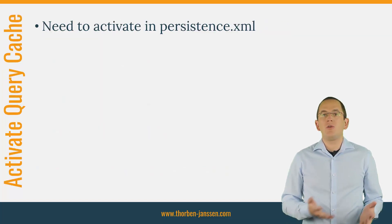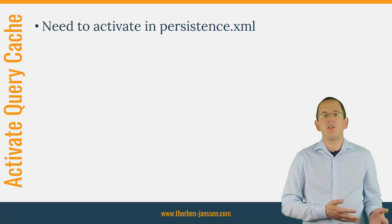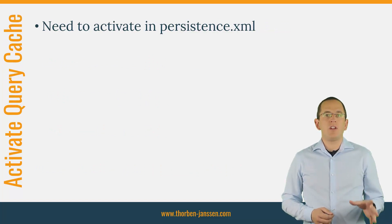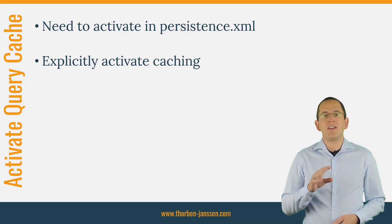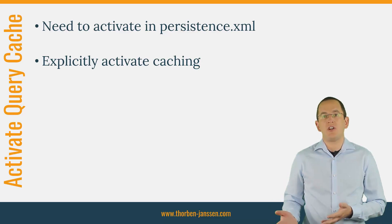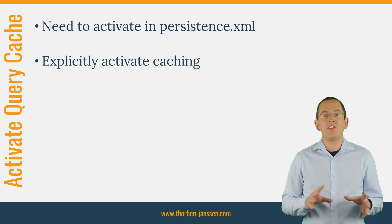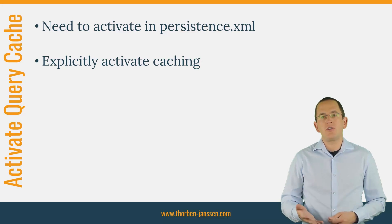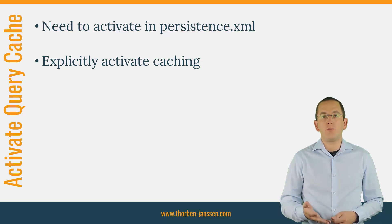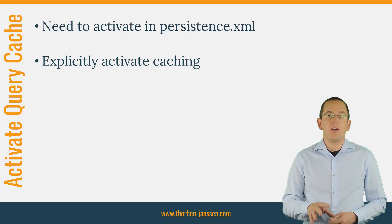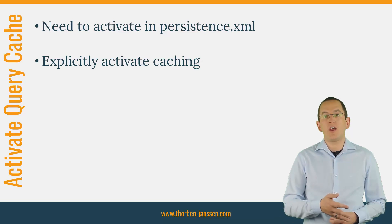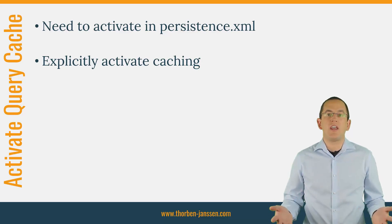To use Hibernate's query cache, you first need to activate it in your persistence.xml file. In the next step, you need to explicitly activate caching for your query. This 2-step activation is necessary because most of your queries are not good candidates for caching. You should only cache the result of a query which you often call with the same set of bind parameter values. In addition to that, the data on which you perform your query should only rarely change — otherwise your query cache will not be very effective, and it will spend more time adding and removing entries than actually returning cached query results.